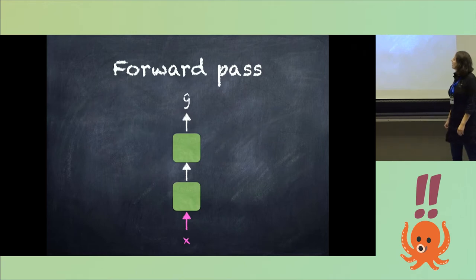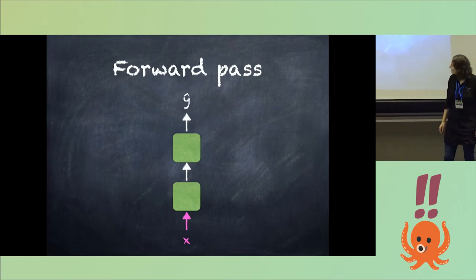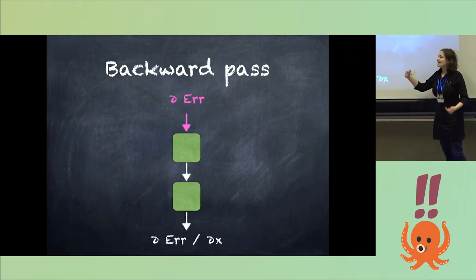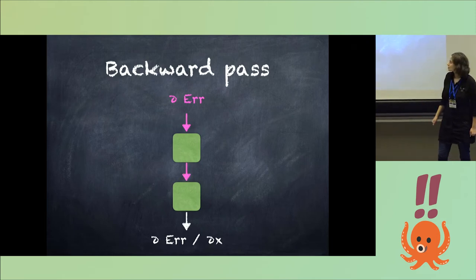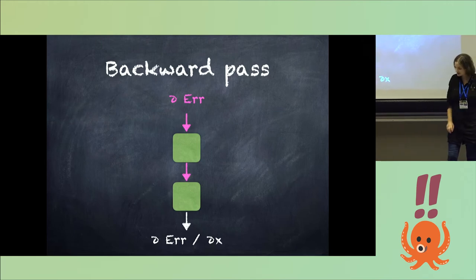So generally you have your forward pass, which is what happens during inference when you're trying to produce outputs. So it goes in, it goes up the computation graph and produces your output. And then when you're training, you're taking the derivative of the error and you're passing it back through each module. So you're training the weights of the matrices that are inside those modules down to the bottom.